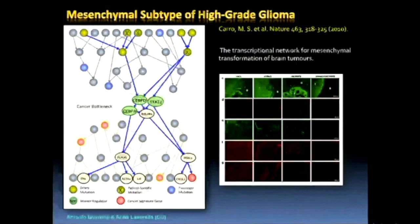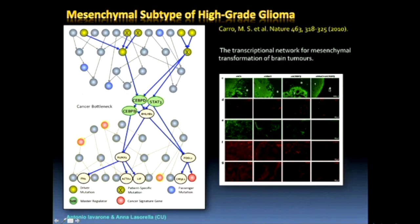In glioma, similarly, we published CEBP-beta, CEBP-delta, and STAT3 as synergistic master regulators. Silencing any one of these proteins does absolutely nothing. But silencing CEBP-beta and STAT3, or CEBP-delta and STAT3, completely abrogates tumorigenesis in vivo — only one animal out of 12 had any tumor. Importantly, ectopic expression of these two proteins reprograms neural stem cells into a mesenchymal phenotype, and the same genes were rediscovered by researchers who transformed fibroblasts into neurons, but in the opposite direction.